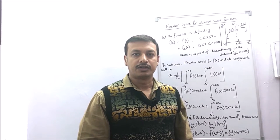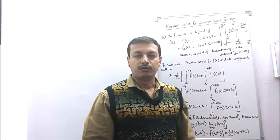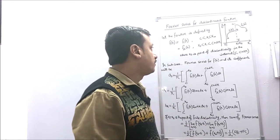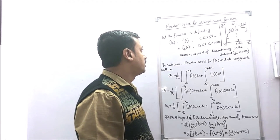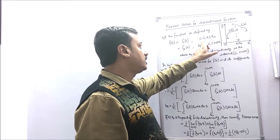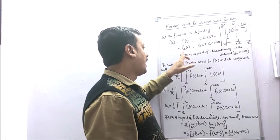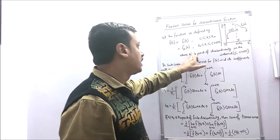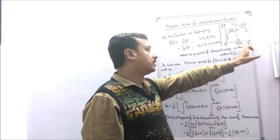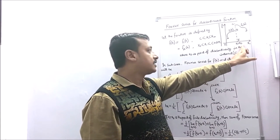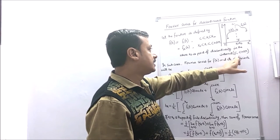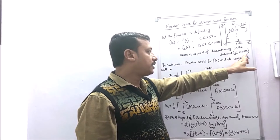A discontinuous function is a function whose value is not continuous at any particular point. We consider a function f defined as f1(x) in the interval c to x0, and its value is f2(x) in the interval x0 to c plus 2π. The discontinuous point is x equals x0, where x0 is the point of discontinuity in the interval c to c plus 2π, and 2π is the period of this function.